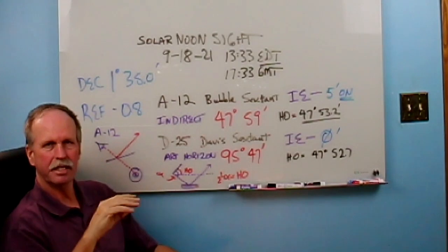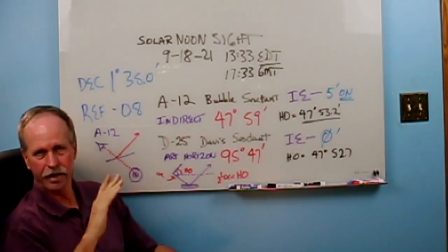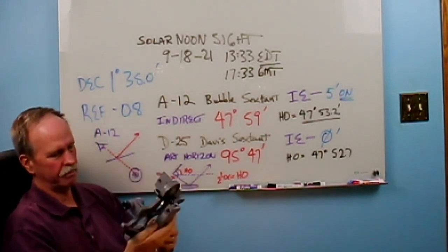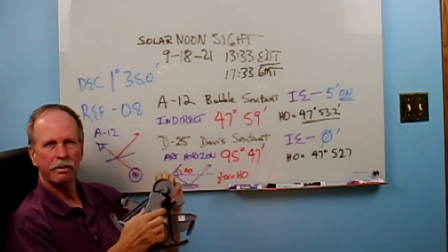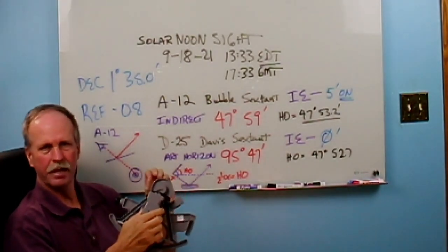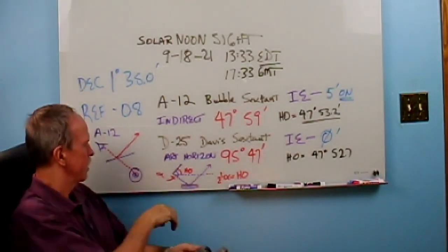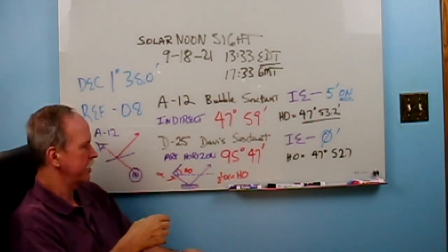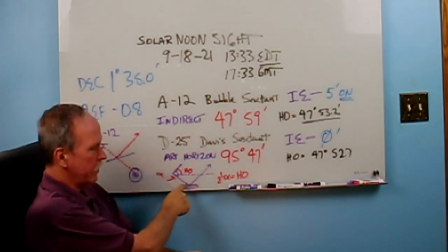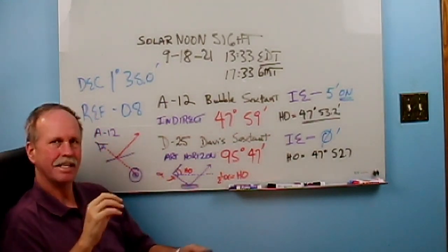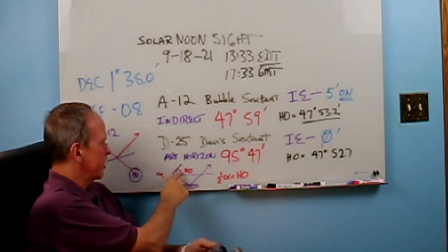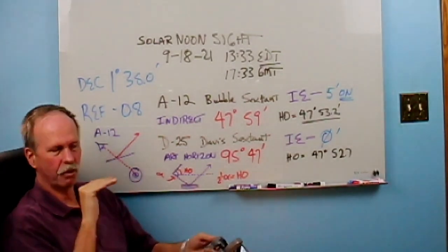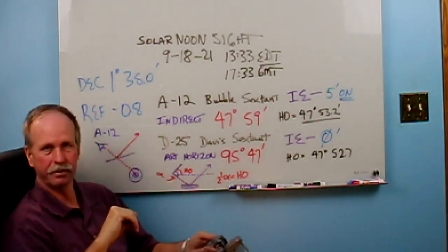Another nice thing about the bubble sextant is that you read off the angle directly without any other correction. Now, when you're using the Davis sextant, I did a technique known as an indirect reading with an artificial horizon. So what I did was I put a pan of water on the ground. It's water in a little black dish. I shot my reading directly to the reflected sun in that dish. And as a result, I measure a very large angle that is exactly twice the angle from the horizontal to the altitude of the sun.